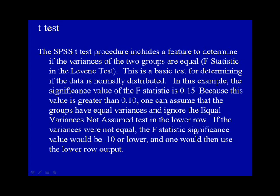Because this value is greater than 0.10, one can assume that the groups have equal variances and ignore the equal variances not assumed test in the lower row. If the variances were not equal, the F-statistic significance value would be 0.10 or lower, and one would then use the lower row output.